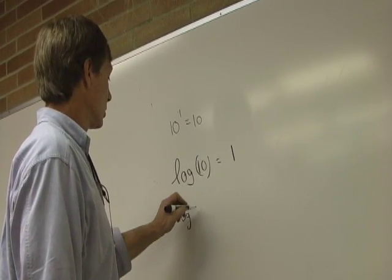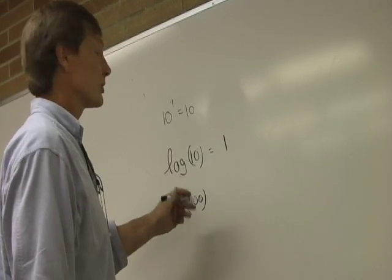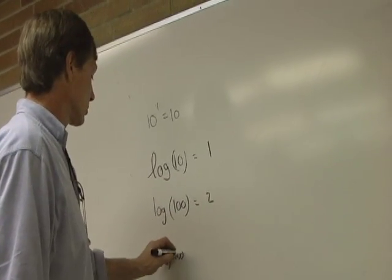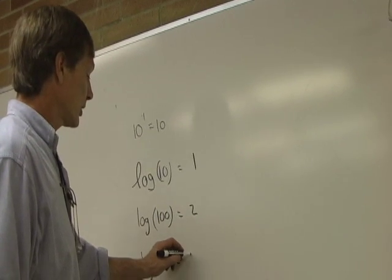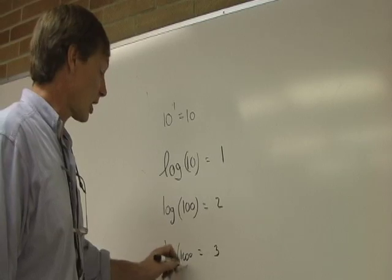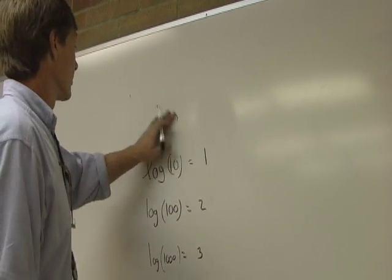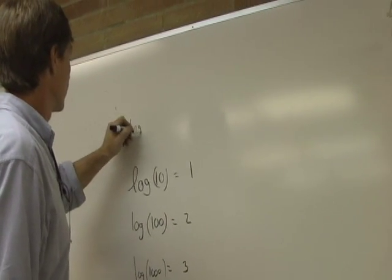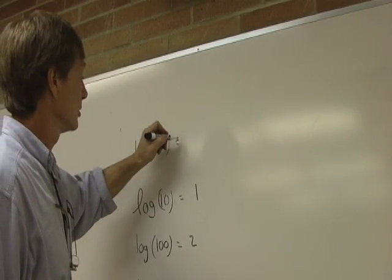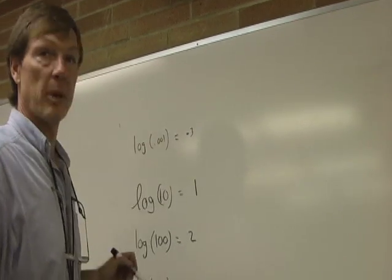The log of 100 is 2, because 100 is 10 to the 2. The log of 1,000 is 3. The log of 0.001, which is 1 times 10 to the minus 3, is minus 3.